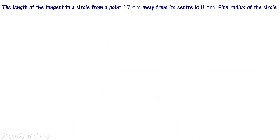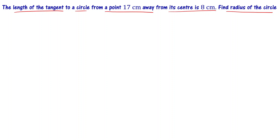The length of the tangent to a circle from a point 17 centimeters away from its center is 8 centimeters. Find the radius of the circle. The point is 17 centimeters away from the center, and the length of the tangent is 8 centimeters.